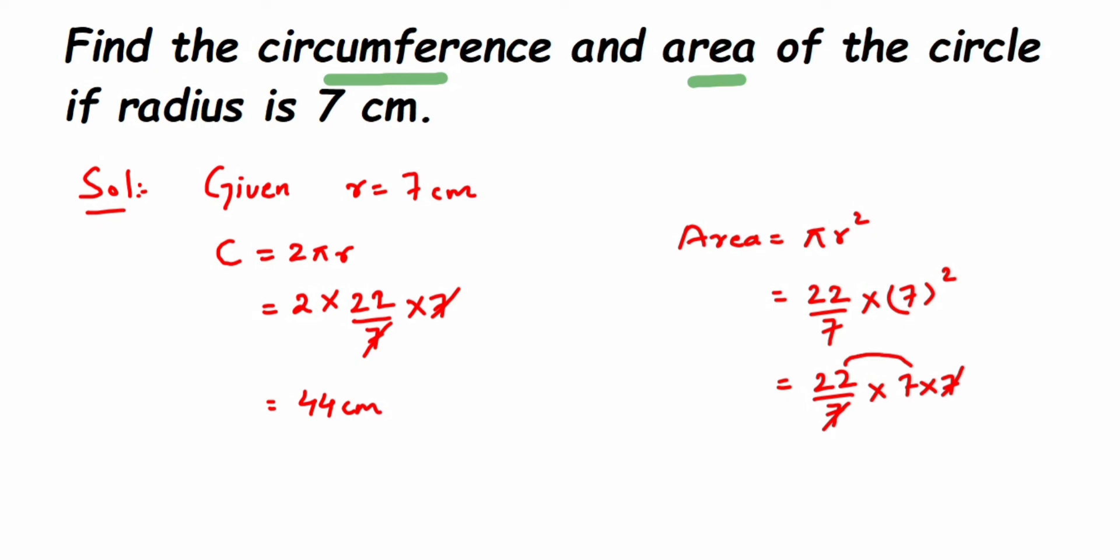22 into 7 is 154, we'll get 154. This is centimeter square. Area will be in square and that is centimeter square, and the circumference will be in centimeters. So that's it, it was a simple question. I hope it's clear. In case you have any further question or doubt, you can drop a comment below. Thank you so much for watching.